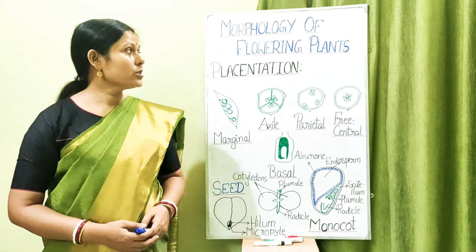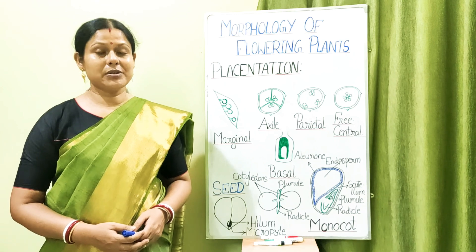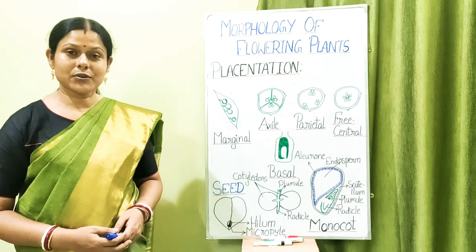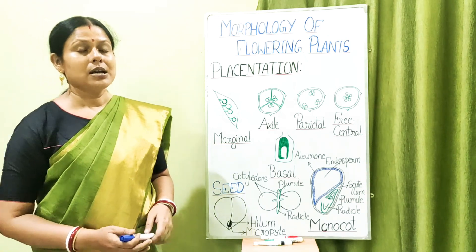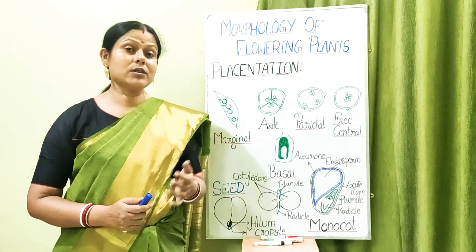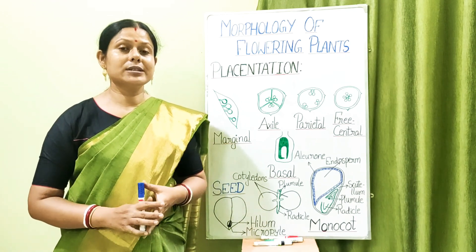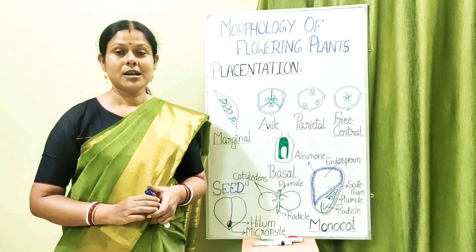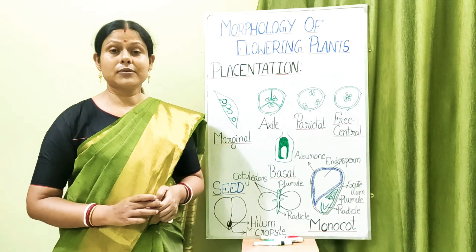Welcome back. Today we are going to continue with the topic from the previous class — morphology of flowering plants — in which we were discussing inflorescence, then the flower and its various parts. In continuation, the things not discussed last time will be covered today, and we will conclude this chapter with the floral diagram and floral formula of the various families discussed in your book.